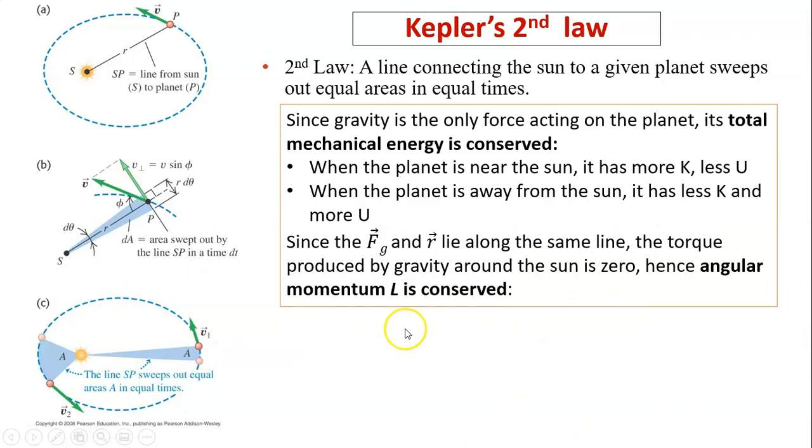The other thing that's conserved is angular momentum. Angular momentum is conserved because the torque produced by gravity around the sun is zero. That's because the force is passing through the rotational axis. It does not produce any torque.